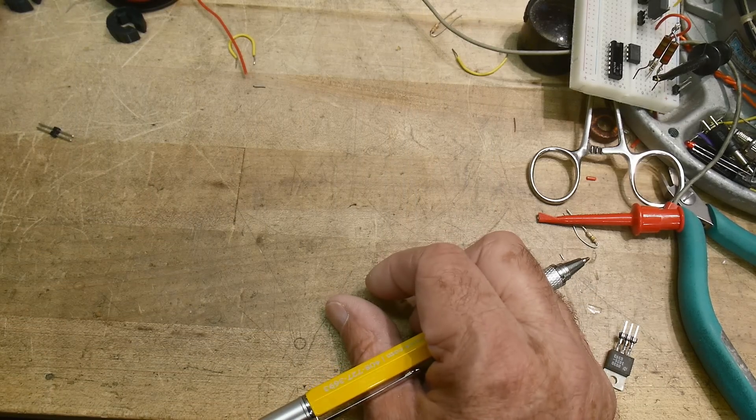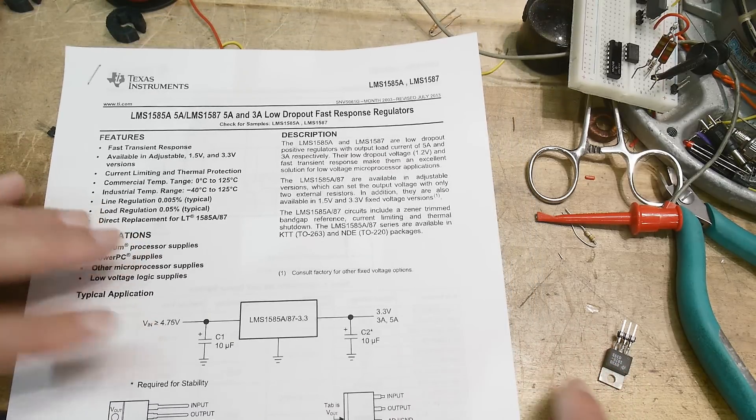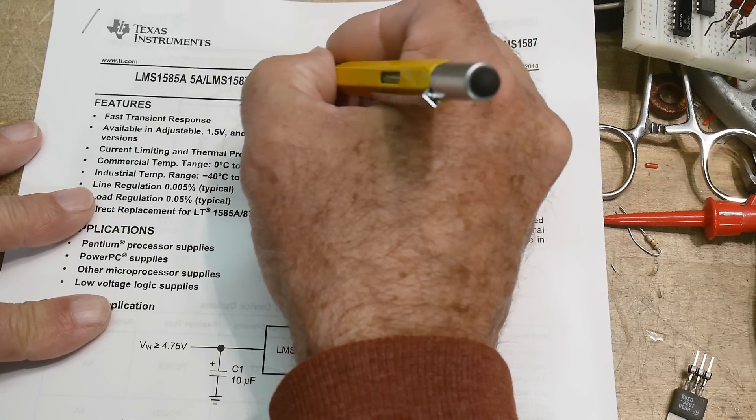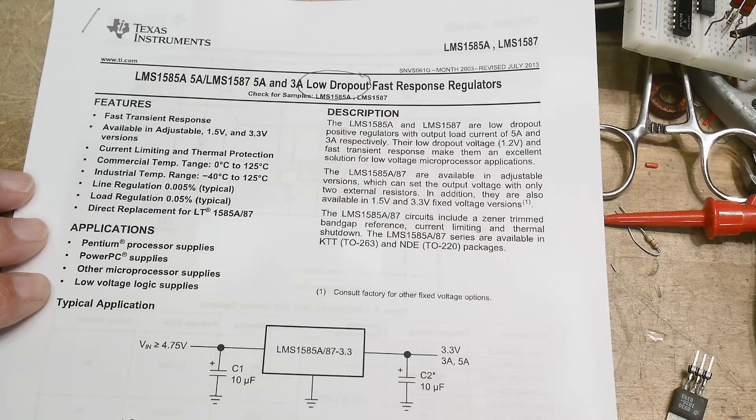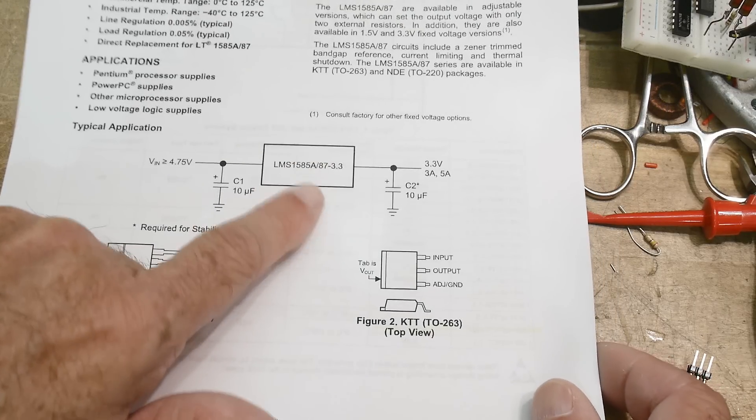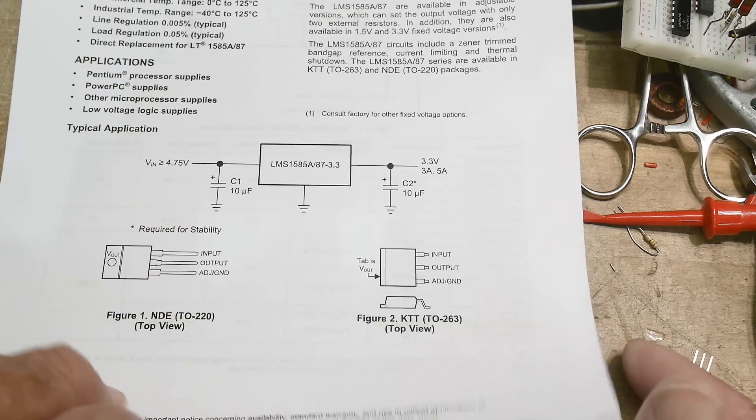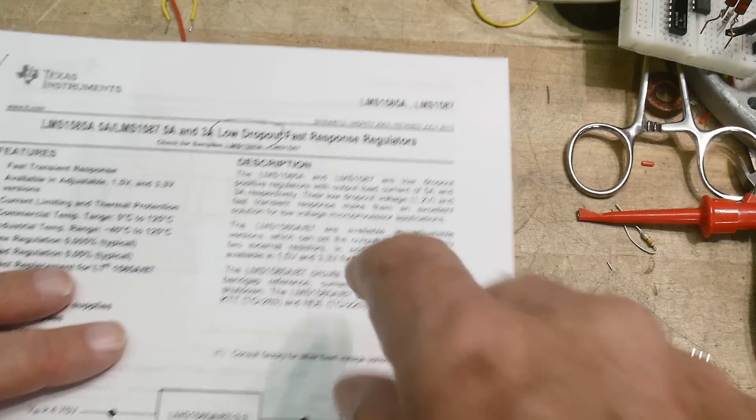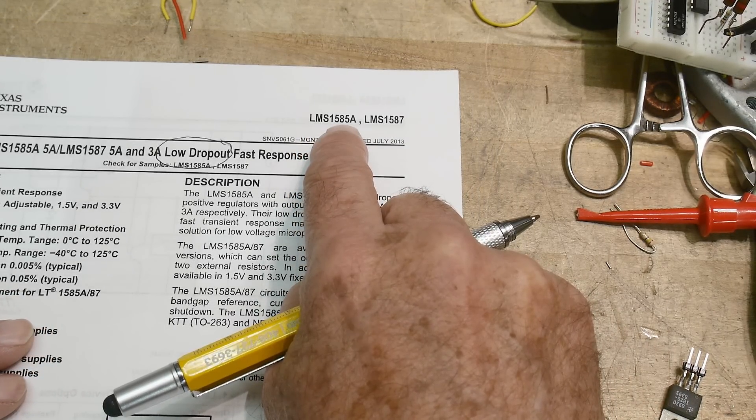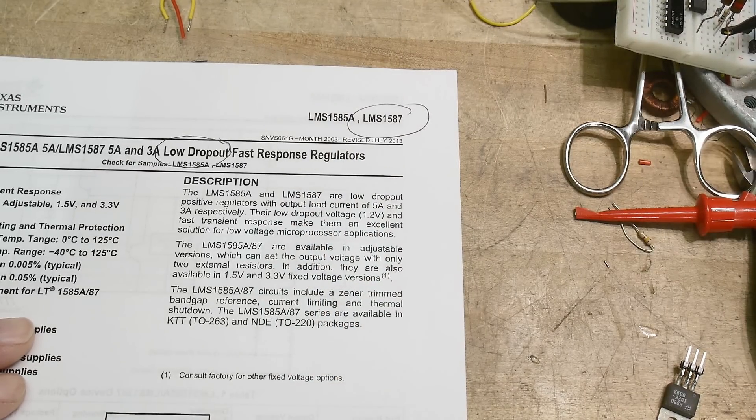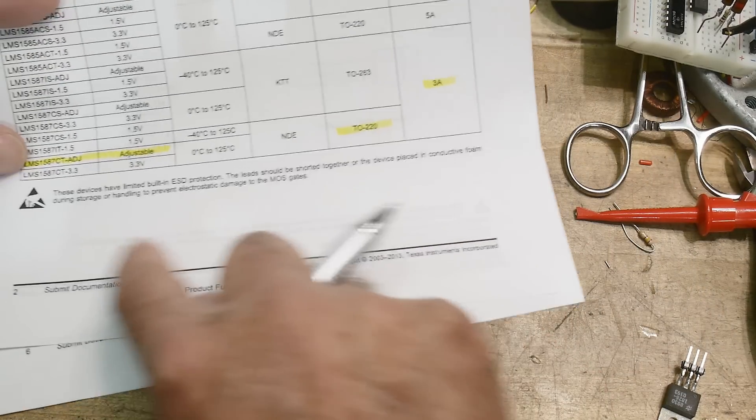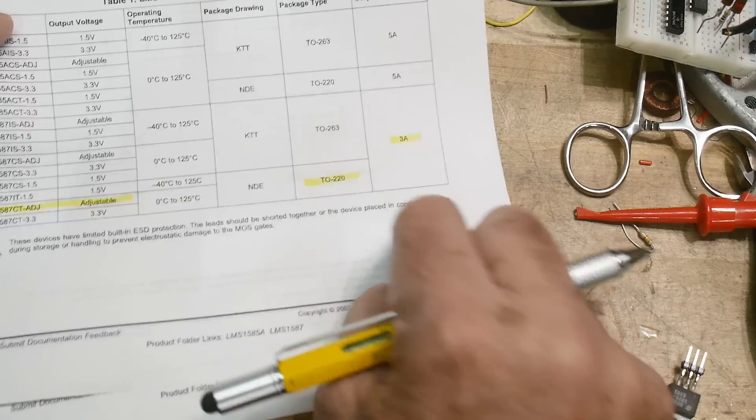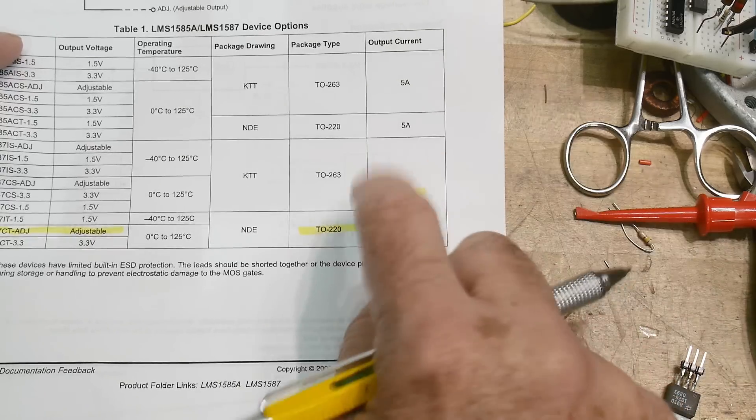So there is things called low dropout regulators. So here is one. A low dropout. Low dropout means that it's lower than those other things, right? And so it looks just like an LM317. It operates the same way as an LM317. It's just a fancier part. This is an LMS 1585 or 1587. I have the 1587. So we'll be trying that. And it is a nice part. This particular part is a TO220 package. It's good for three amps. So it's twice as good as that LM317. So that's nice.